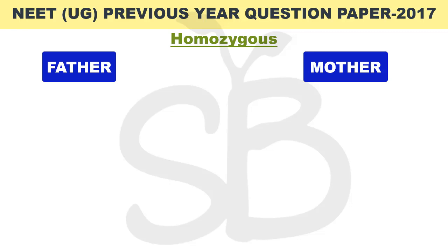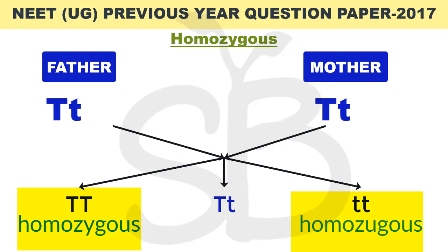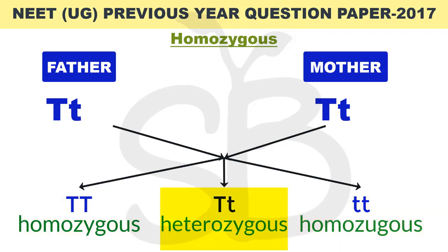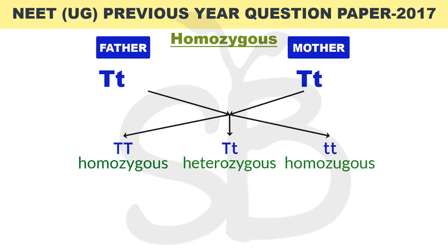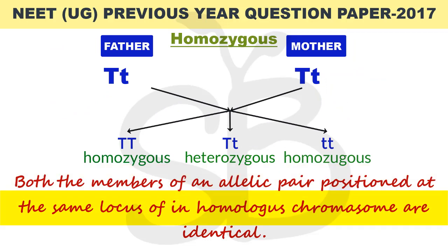Homozygous means we have a pair of chromosomes representing a particular character. For example, height is represented by two characters — capital T and small t. A zygote can form in three conditions: capital T capital T (TT), capital T small t (Tt), and small t small t (tt). The homozygous conditions are TT and tt, while the heterozygous condition is Tt. Both members of an allelic pair positioned at the same locus in homologous chromosomes are identical.